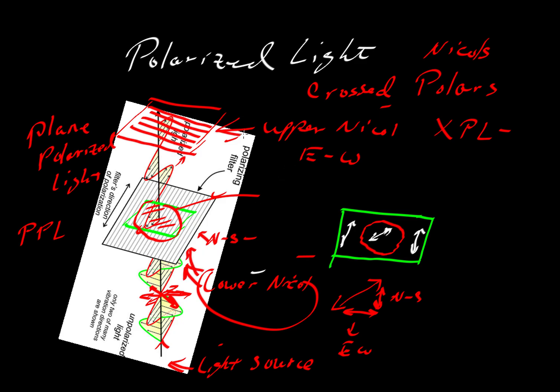This upper nickel, you can place in the direction of the field of view, or you can pull it out and remove it so you don't see its effects. So that's a choice we can make, whether we want to view plane polarized light, which means that the upper nickel is out, or whether we want cross-polars, which means that the upper nickel is in.